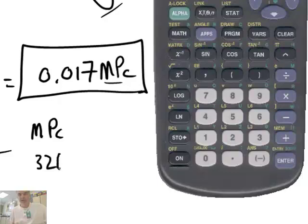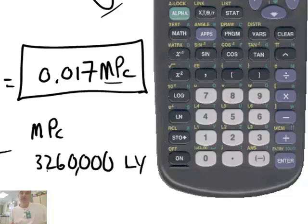So this would be 3.26 million light years across. That's one megaparsec. And so 0.017 of that, that's a pretty reasonable number.